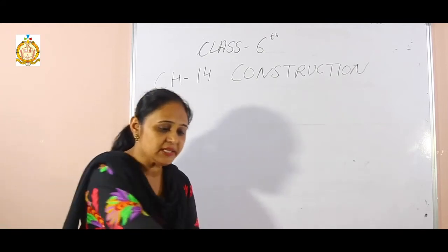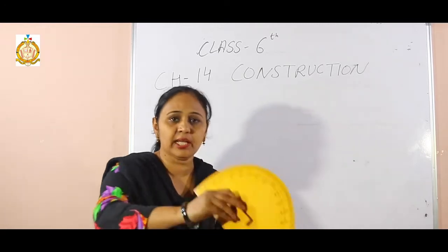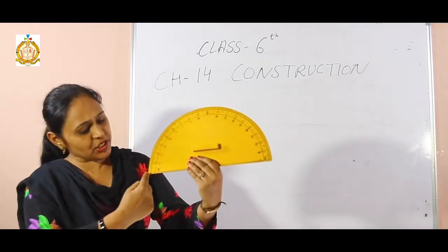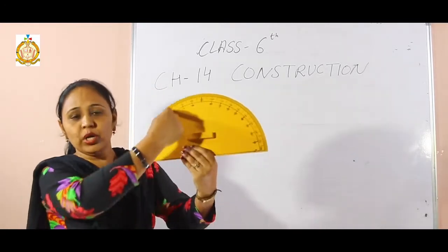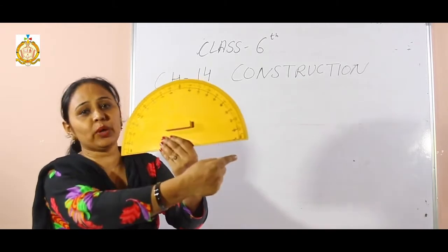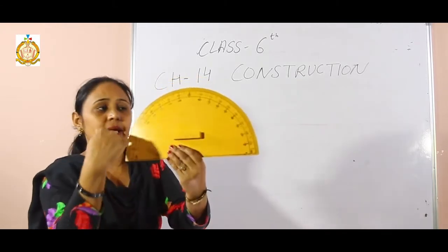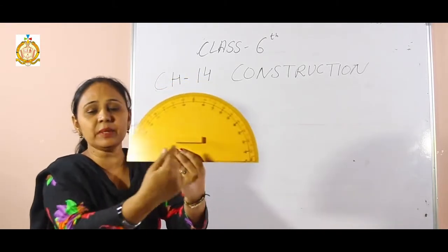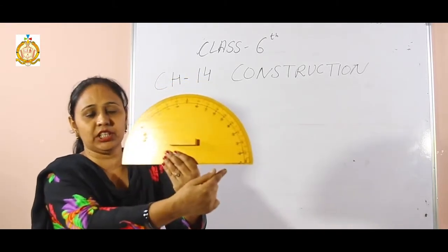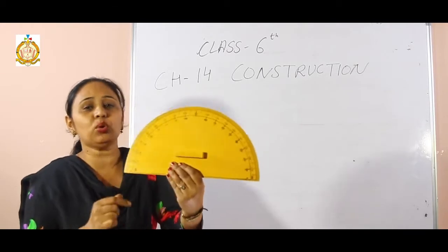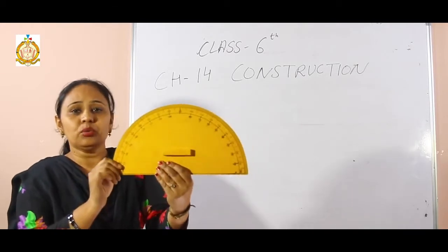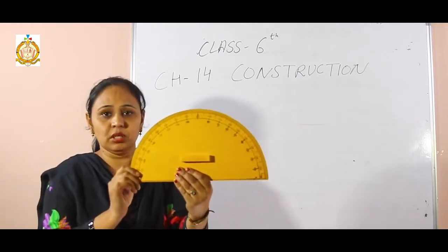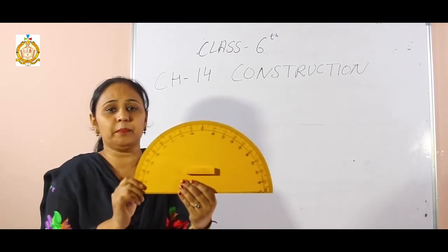There is our protractor. We know that angles start from 0 and go up to 180 degrees. That means this is the semicircle, representing the angle of 180 degrees. Now, if we want to make the construction, we use the compass.